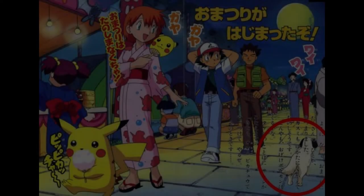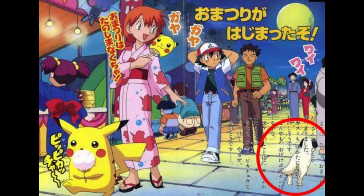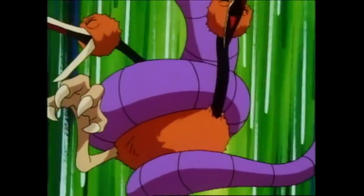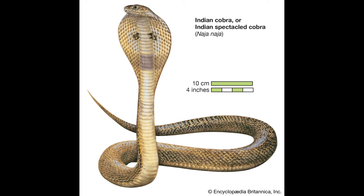Do animals exist in the Pokémon world? In the Bulbagarden forums, a user posted a picture of a dog circled in a Japanese publication. While most creatures in the show are Pokémon, real life fish have also been seen. Arbok backwards is Cobra, and the Pokémon Arbok does resemble a cobra snake.